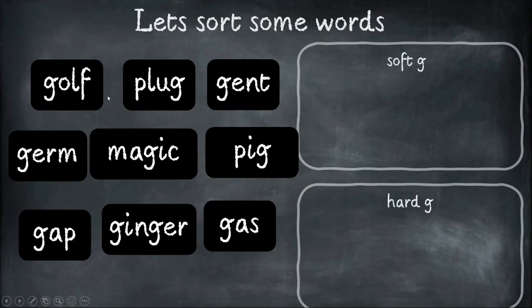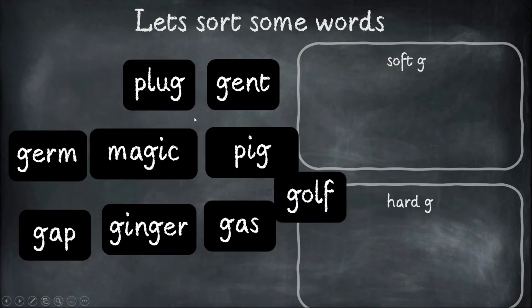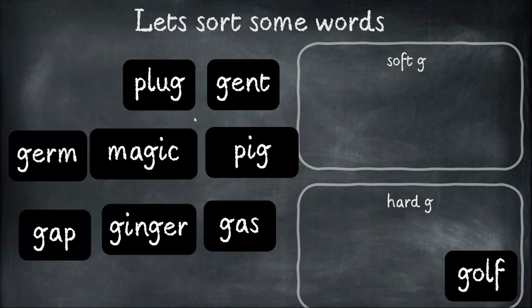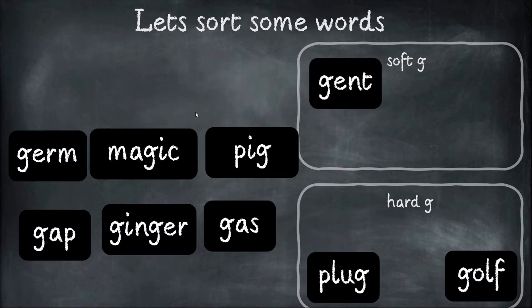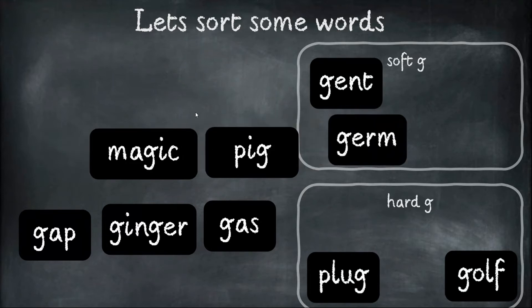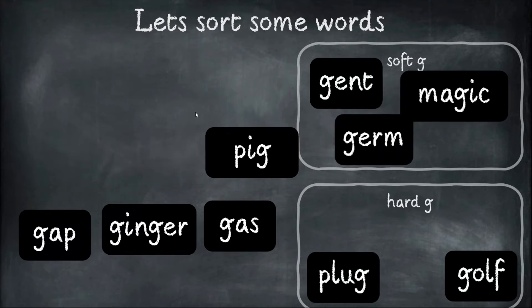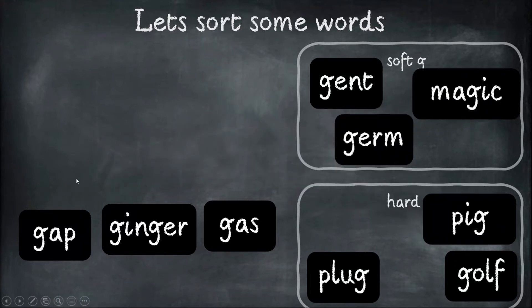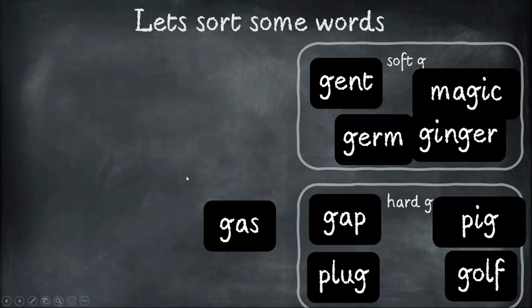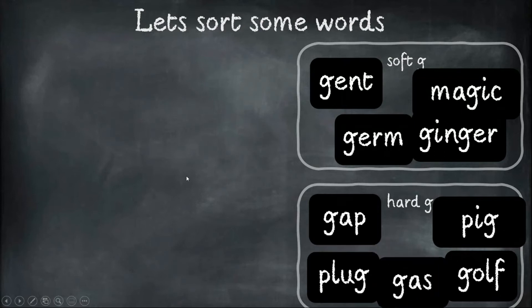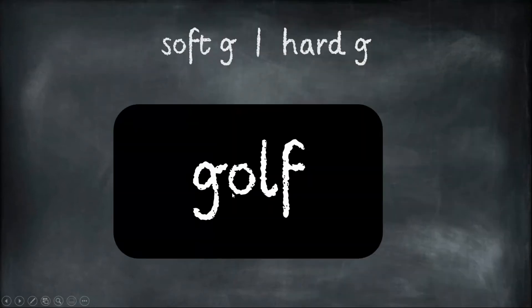Here are some examples of words we looked at last week. Let's have a look at them again: golf, plug, gent, germ, magic, pig, gap, ginger, and gas. Now we're going to look at them again and I want you to think, is this the hard G or a soft G?